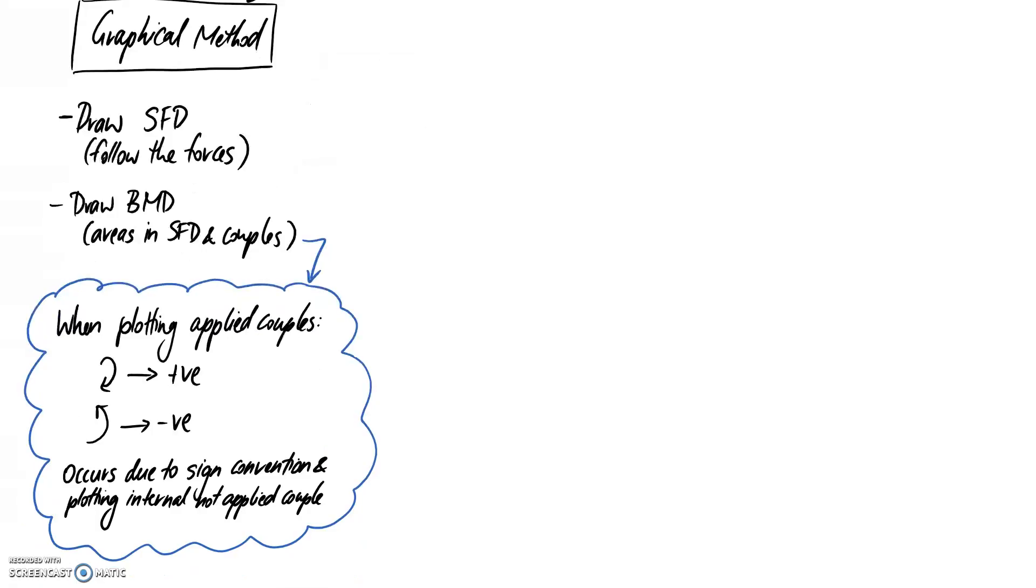Just a quick tip for when you're drawing these bending moment diagrams - you need to watch out which direction the couples are going to be plotted. Contrary to what we've been doing throughout the semester, and this is the only time it really applies, if you have a clockwise couple applied to your beam, you need to plot this as a positive on your bending moment diagram.